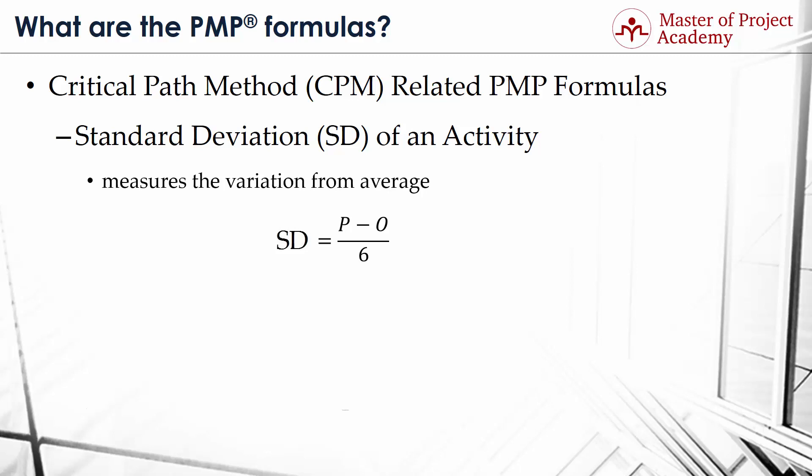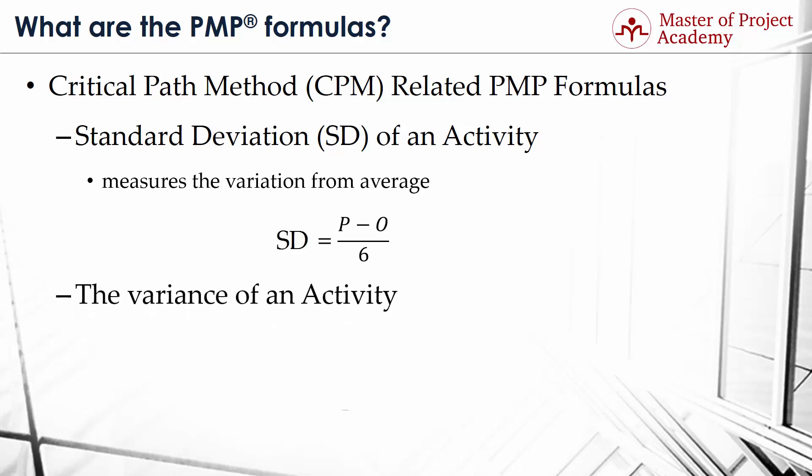The Variance of an Activity. We use this formula result as an indicator of activity risk level, which prompts the course of action to take. Activity variance calculation involves taking the square of activity standard deviation. So, the variance is the result of P minus O, all divided by 6, and then to the power of 2.